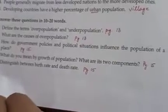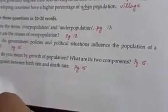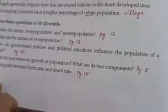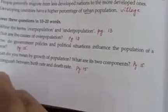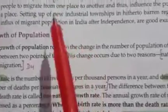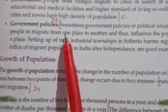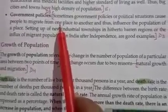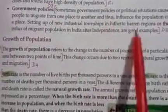The next question is: how do government policies and political situation influence the population of a place? Its answer is on page number 15. Here the answer is given under 'Government Policy' — the full whole point you need to explain.